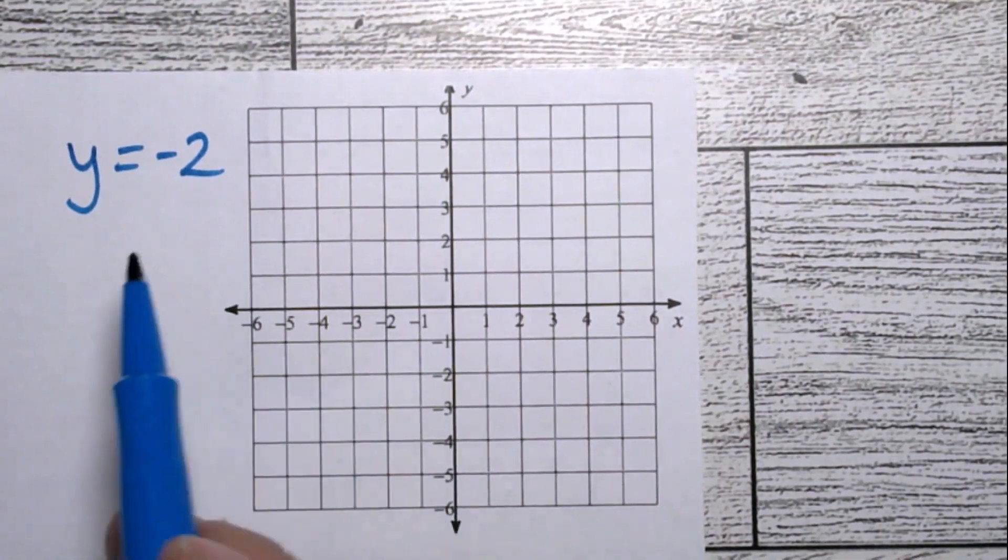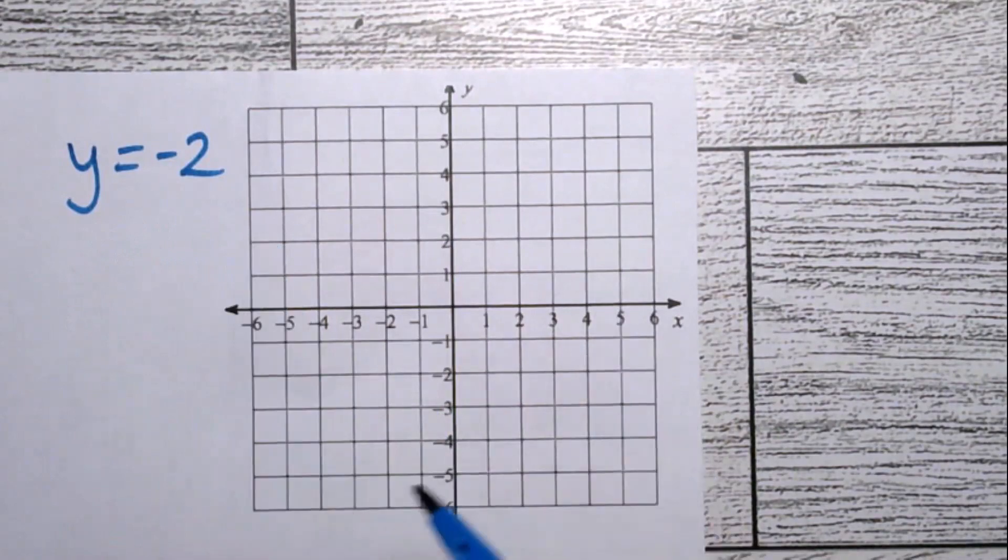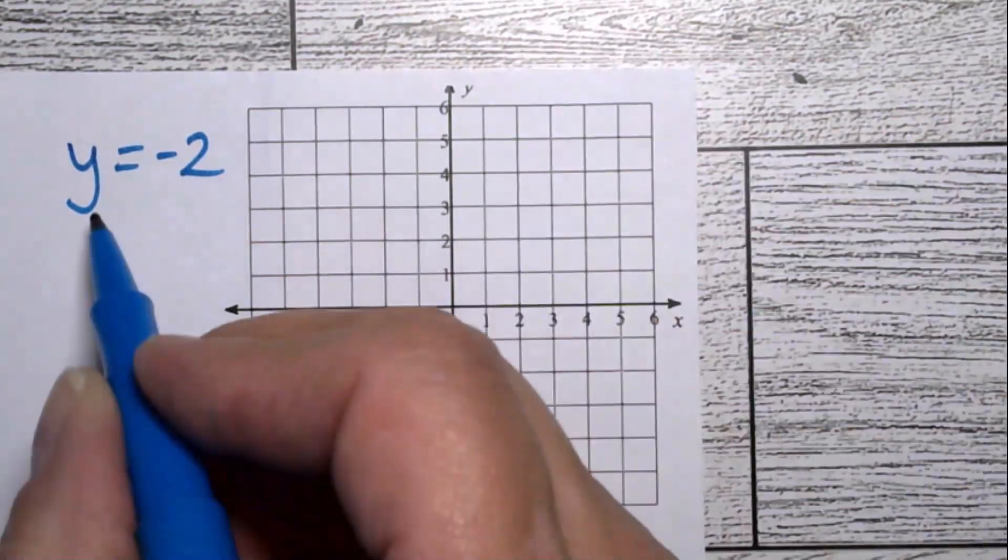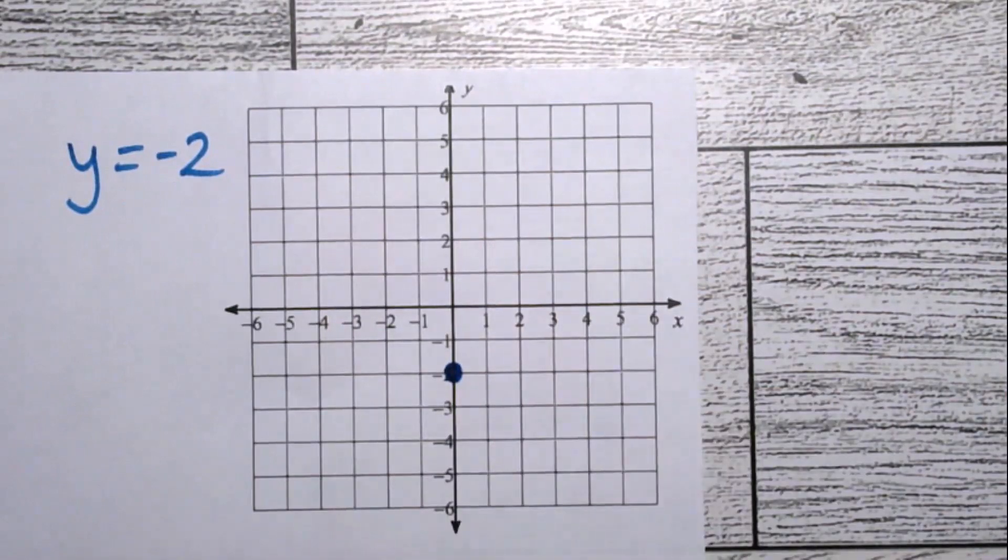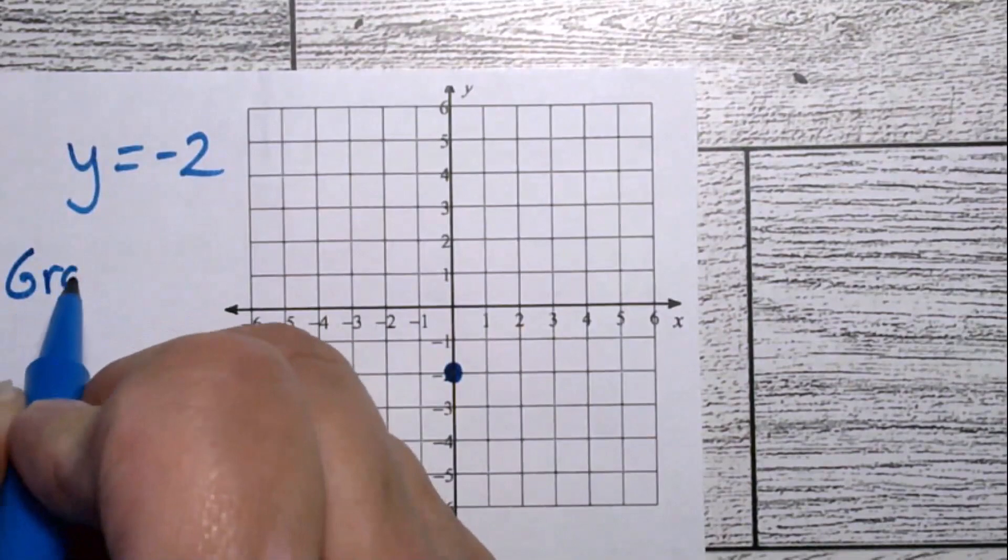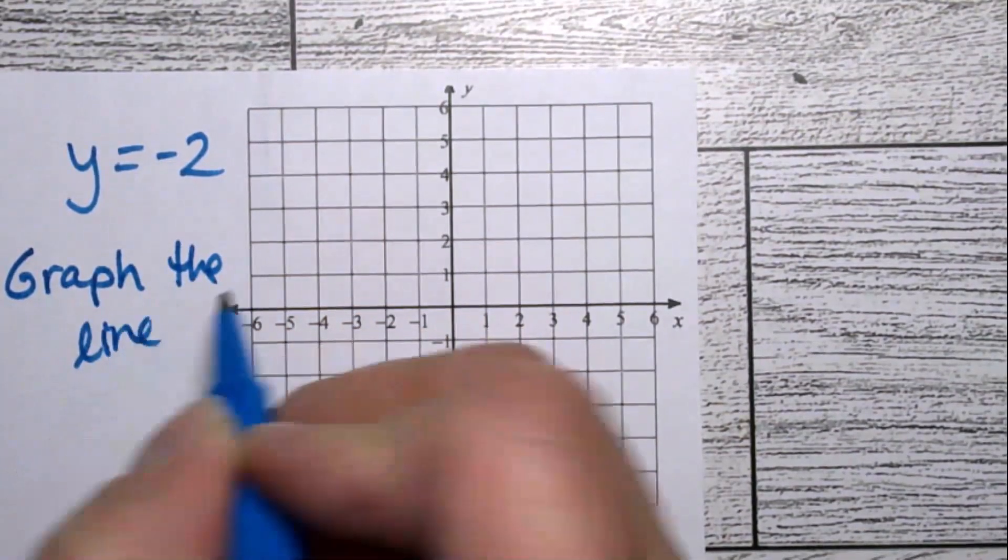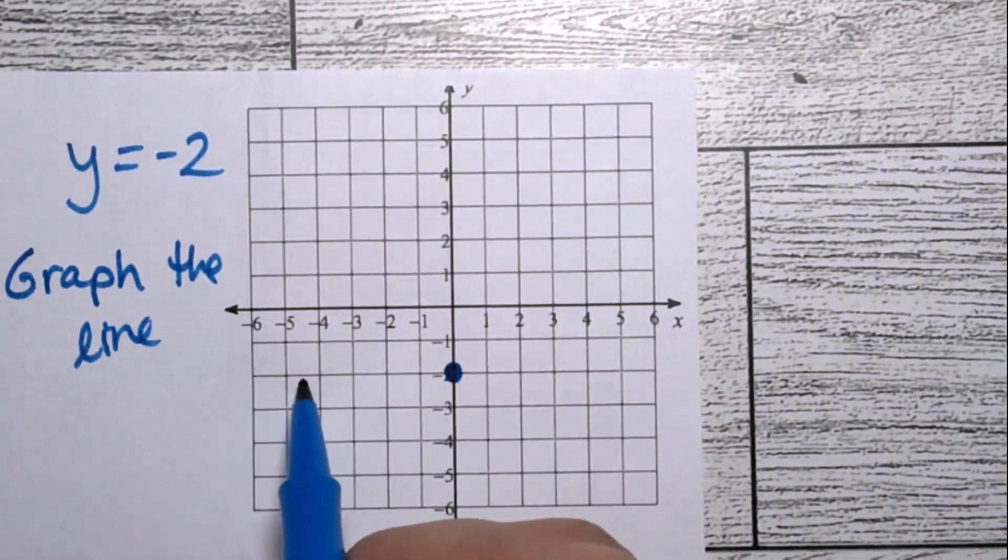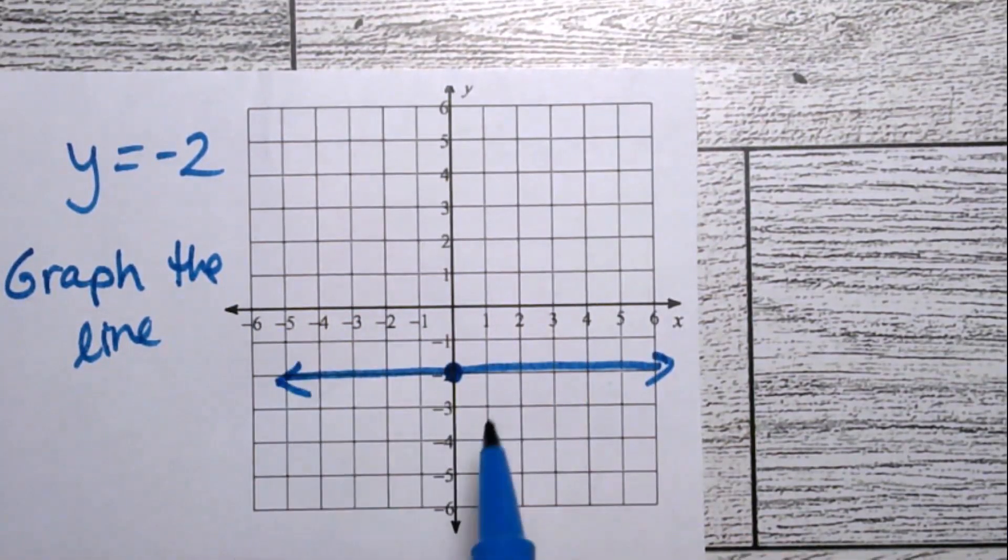And y equals negative 2. Well, how do you graph that? In many ways, it looks like it's just a point. It is the y-intercept. It is negative 2. But in the context, if they want you to graph a line, in context, we're talking about the line where all the values of y will be negative 2, just like in that list we just did.